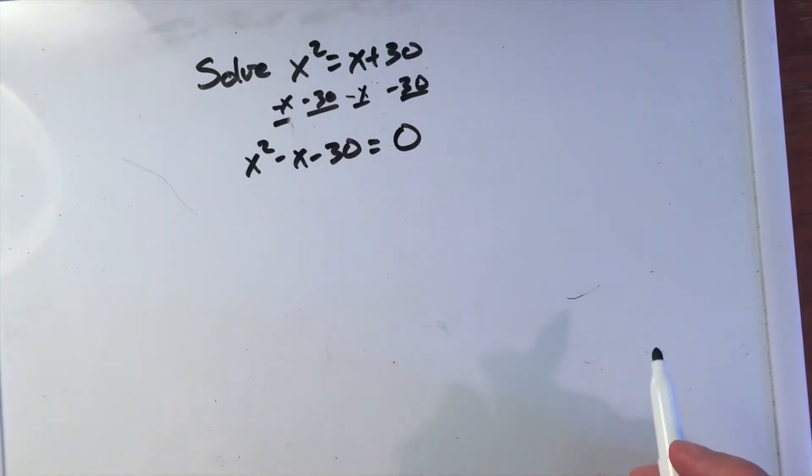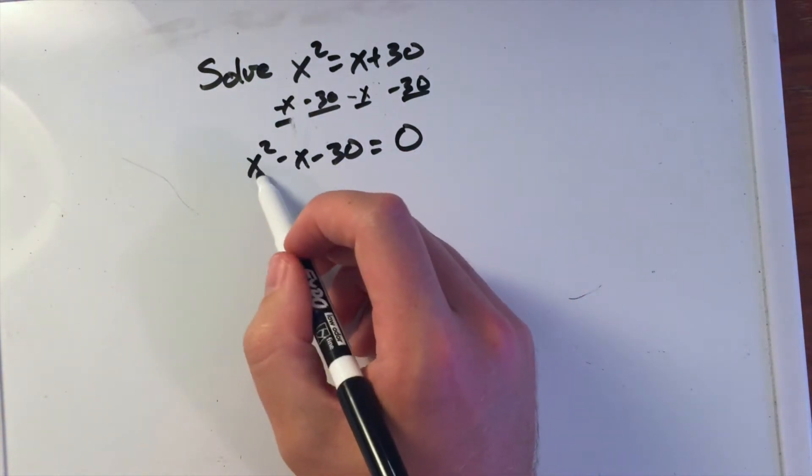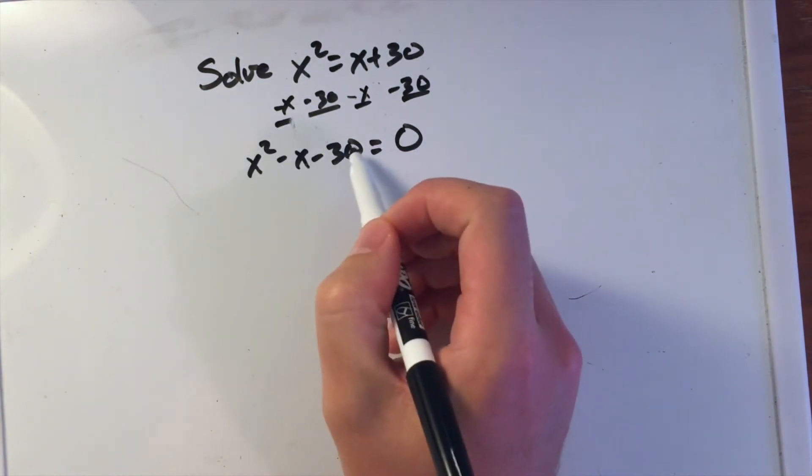Now we want to do what's called factoring. When I see this factoring, I have this basic form: x squared minus x minus 30.